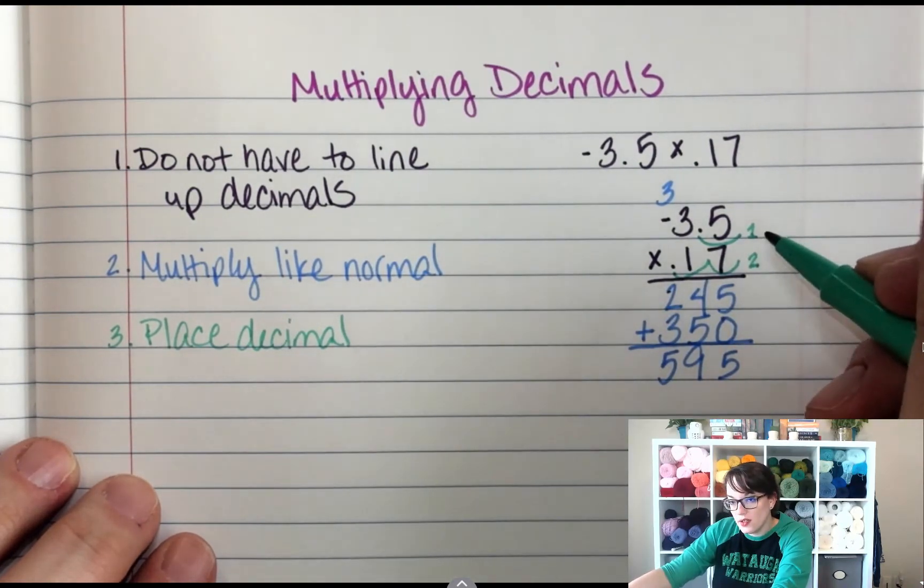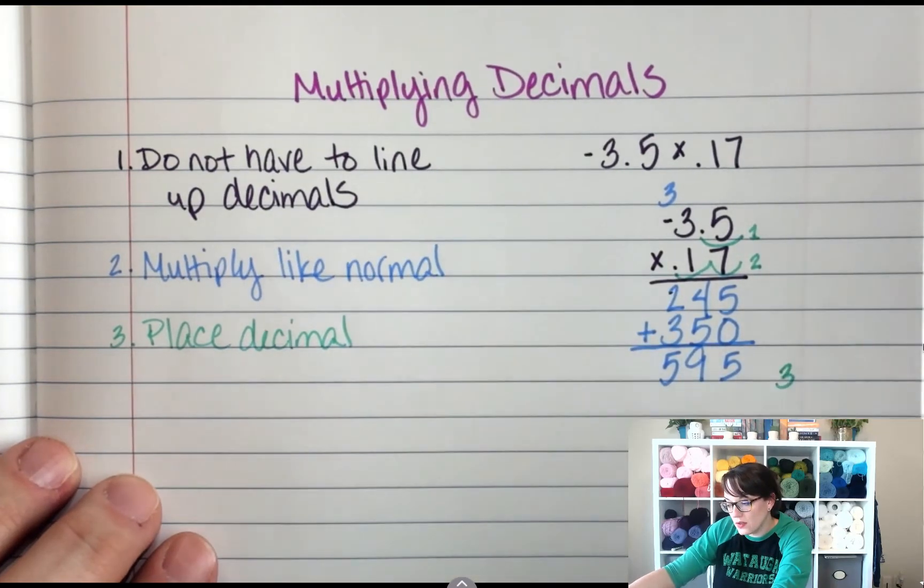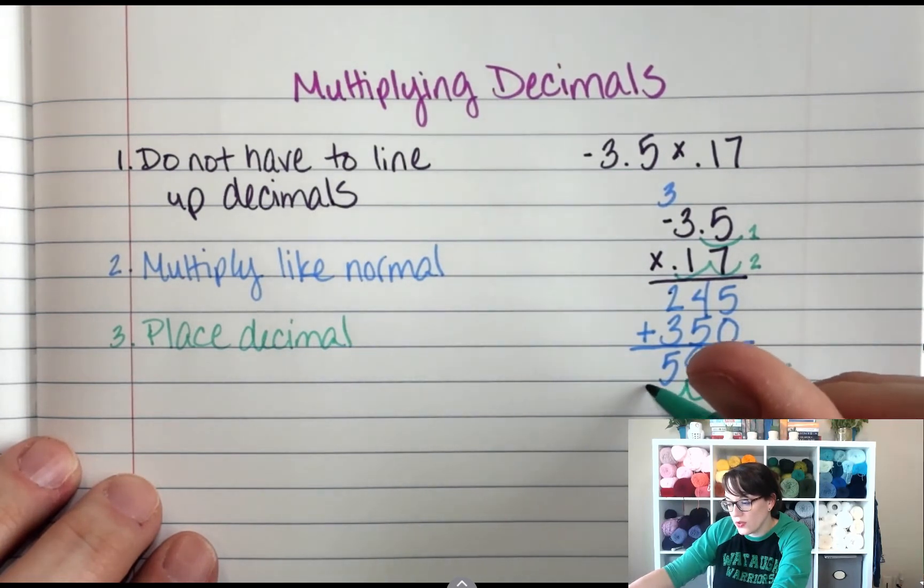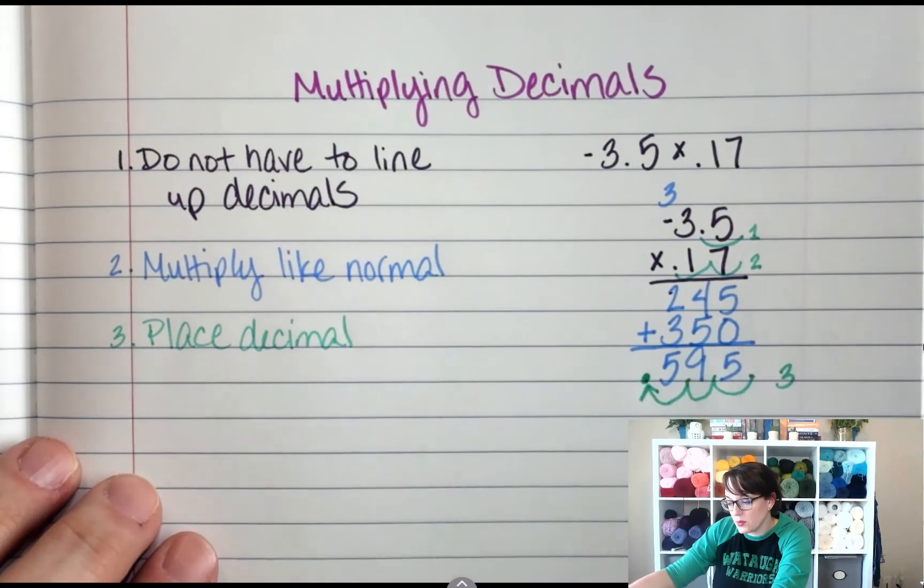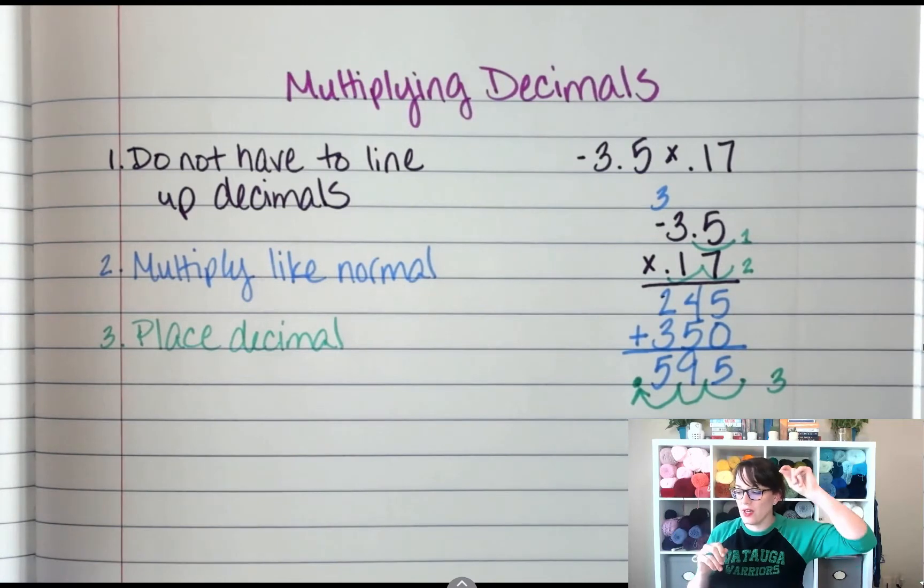So 1 plus 2 is 3. So I have to start here, and I'm going to go 1, 2, 3 decimal places. So my answer is, well, it's not my answer yet, 0.595.